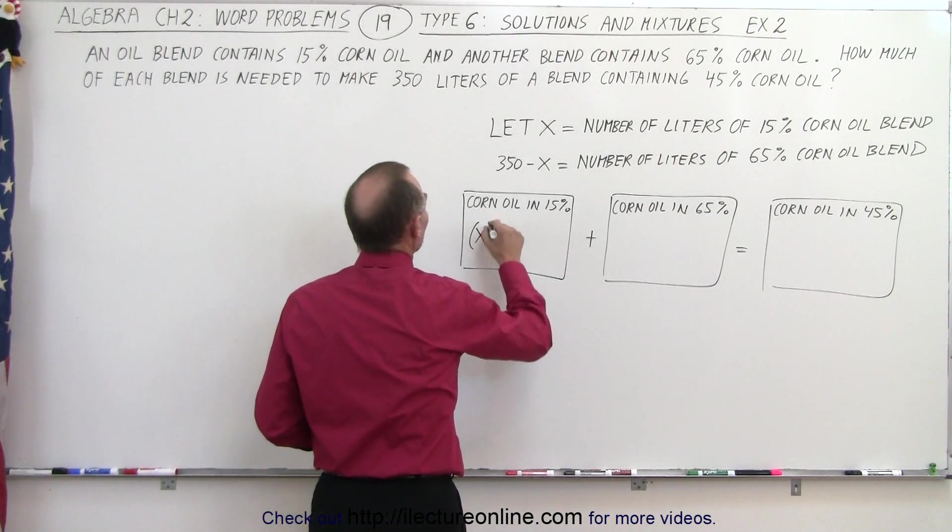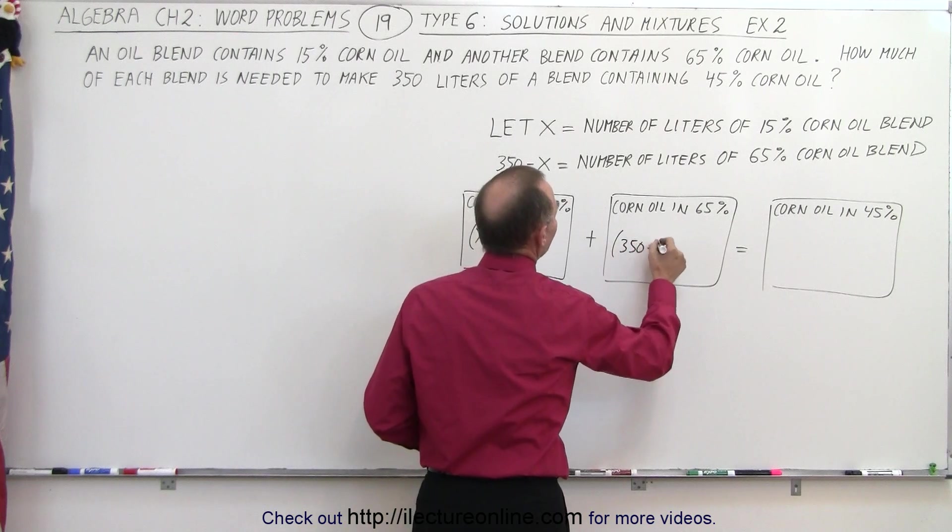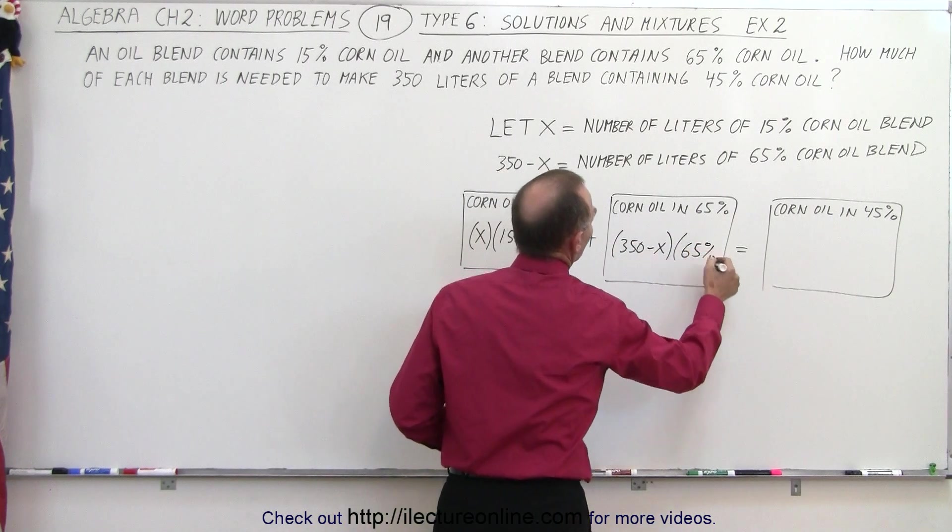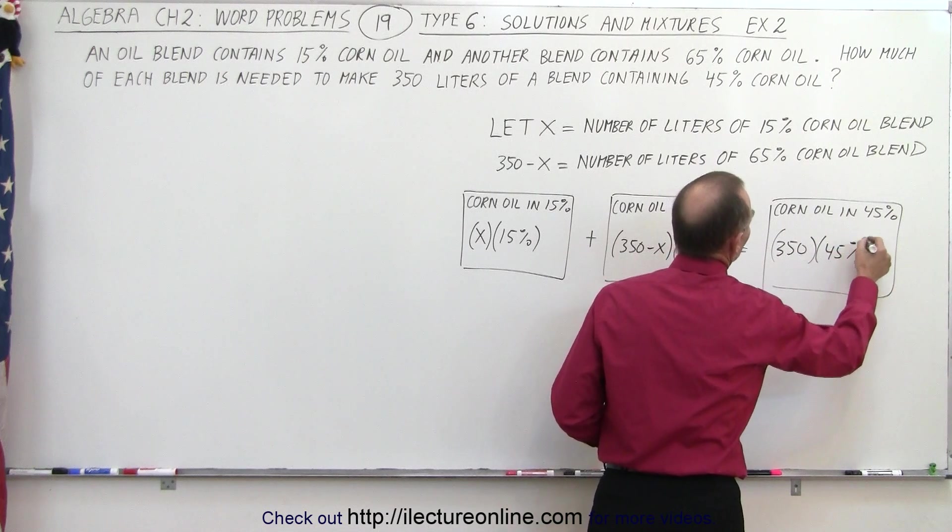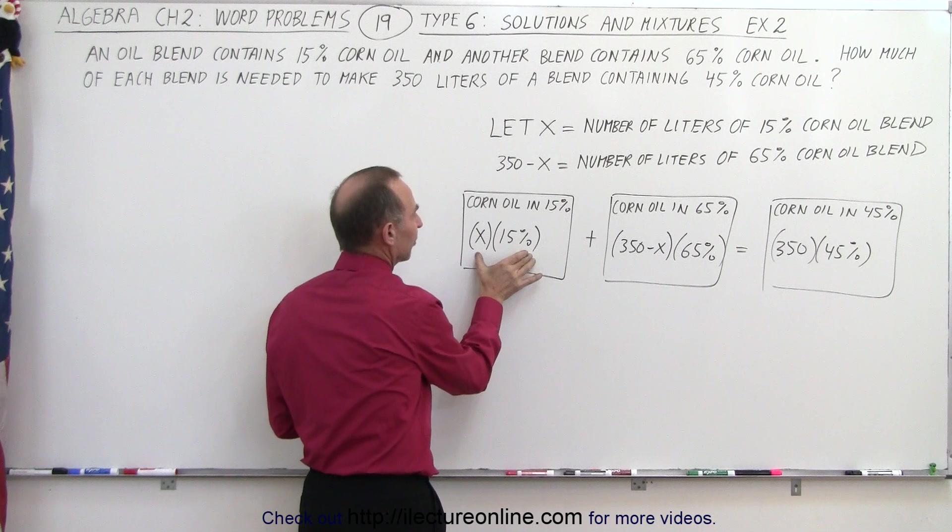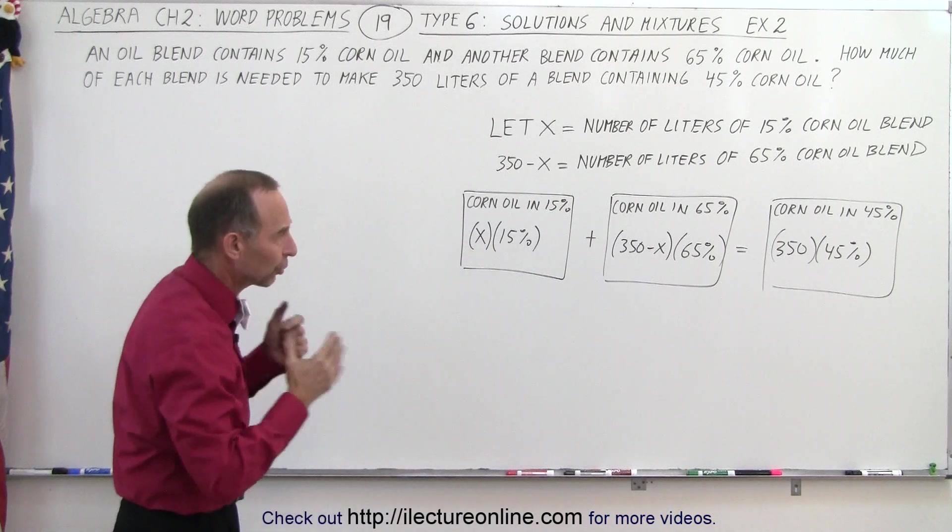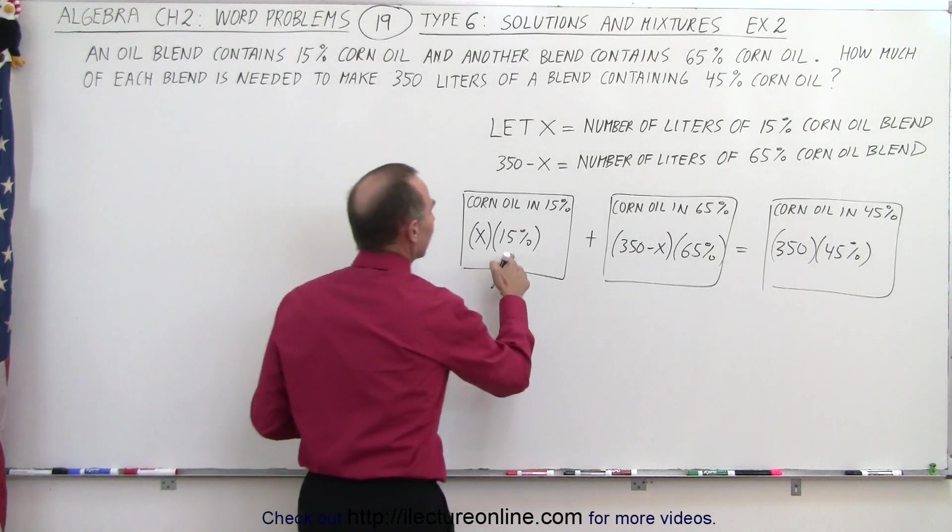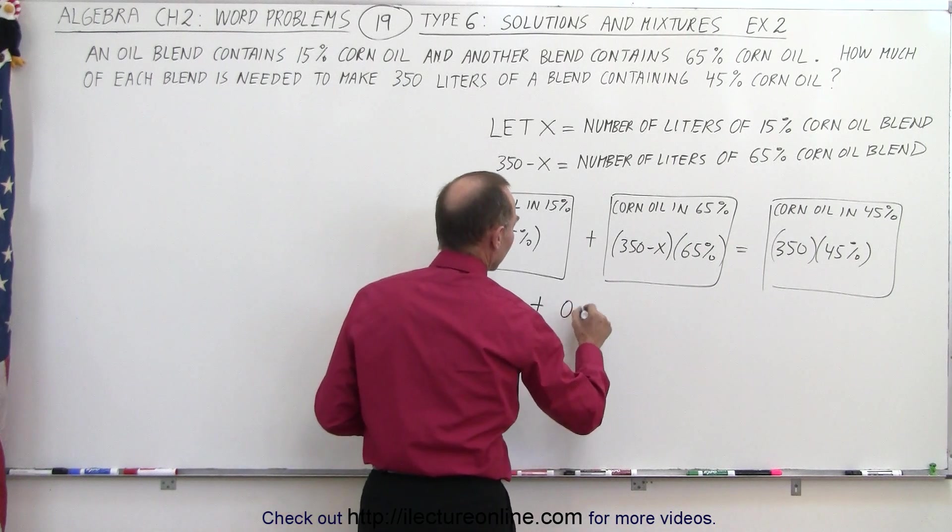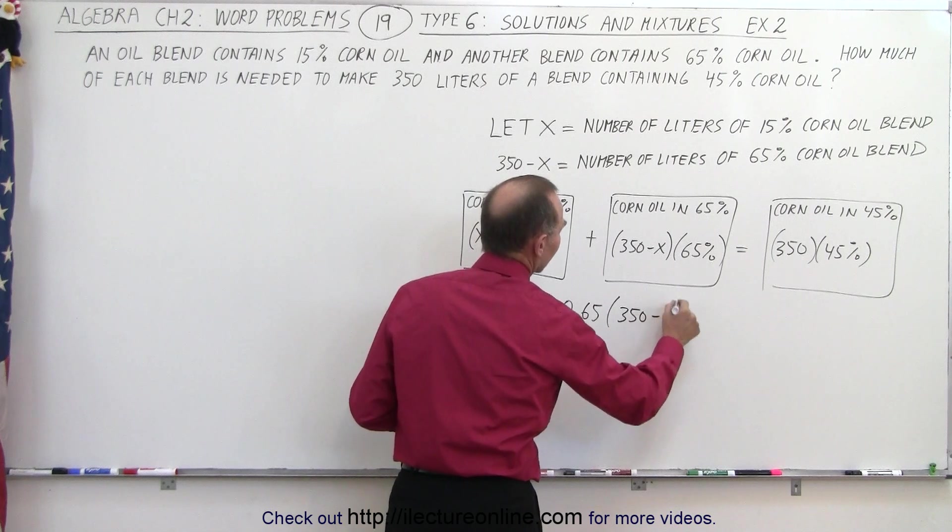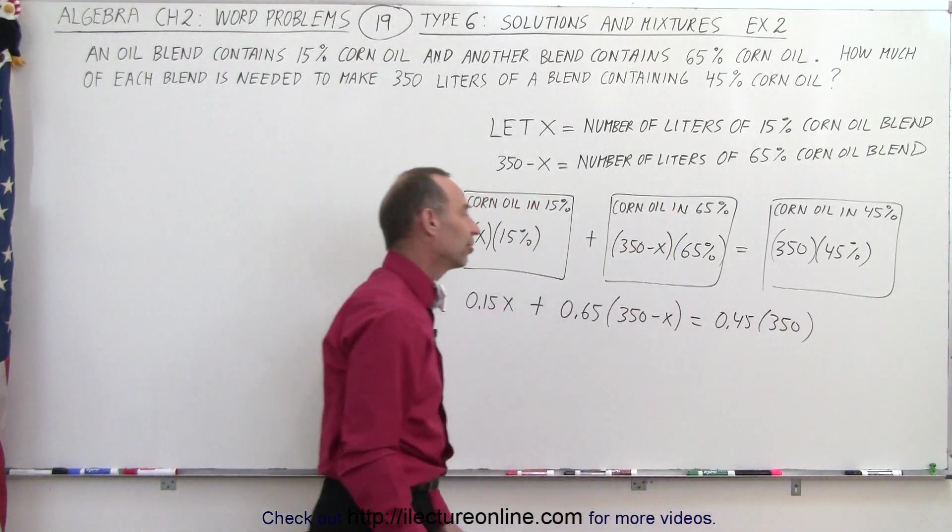So in this case, it'll be x liters times the percent, which is 15%. Here, the amount that we have will be 350 minus x multiplied times 65%. And here, the total, we have 350, and we multiply that times 45%. So essentially, we add up all the corn oil in the first blend plus all the corn oil in the second blend equals the total corn oil in the final blend. And that's how we keep track of the corn oil, which will give us the equation. So turning that into a decimal, we have 0.15x plus 0.65 times 350 minus x is equal to 0.45 multiplied times the total number of liters of the final blend, which is 350.